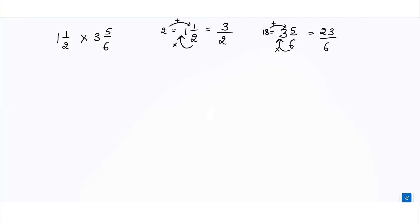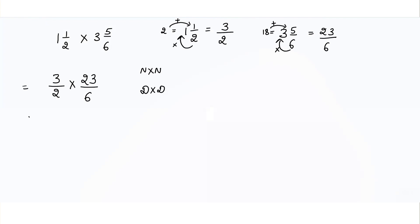Now we write 3/2 multiplied by 23/6. We multiply numerator with numerator and denominator with denominator. So 3 into 23 is 69, and 2 into 6 is 12. Then we simplify — divide both by 3 — and we get 23 over 4.